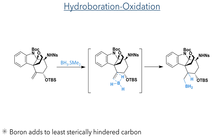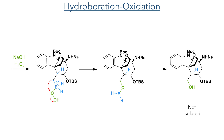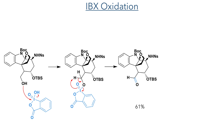The authors then moved into a series of oxidation reactions, the first being a hydroboration-oxidation reaction. Concerted addition of borane to the exocyclic double bond forms a boron-bound intermediate, with the boron adding to the less sterically hindered side of the double bond. Oxidative workup using sodium hydroxide and hydrogen peroxide forms the alcohol: the hydroperoxide first attacks the boron to form a borate and the carbon group then migrates to form a carbon-oxygen bond, generating the primary alcohol upon workup. This alcohol was not isolated and was instead directly oxidized using IBX, with the alcohol attacking the iodine to form the carbonyl group in a 61% yield.